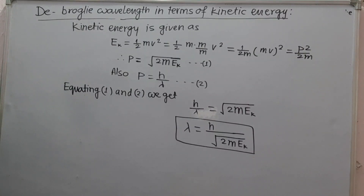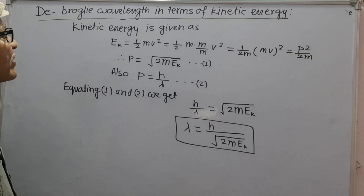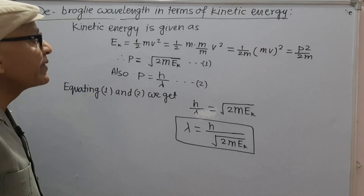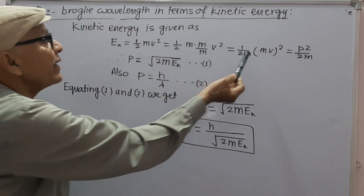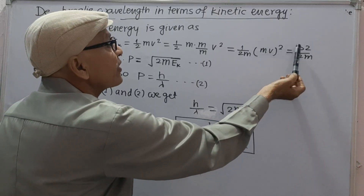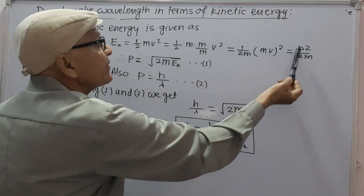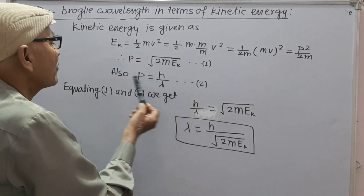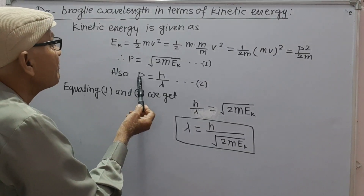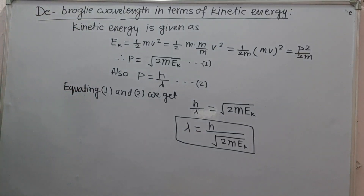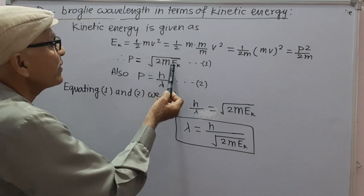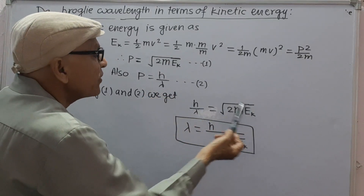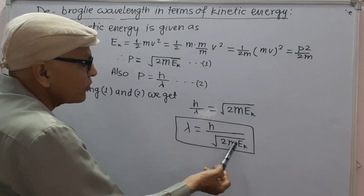Next, we take De Broglie wavelength in terms of kinetic energy. Kinetic energy Ek = ½mv² = p²/2m, which gives p = √(2mEk). From the De Broglie formula, p = h/λ. Equating both, h/λ = √(2mEk), which gives λ = h / √(2mEk).